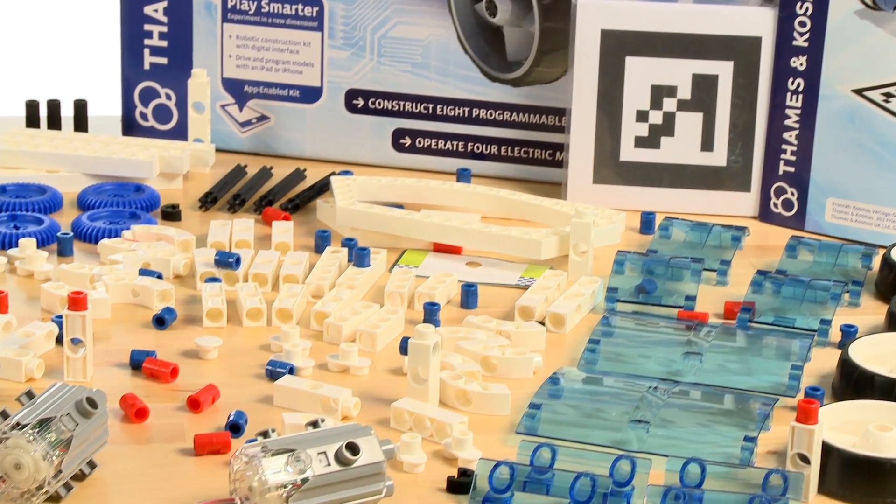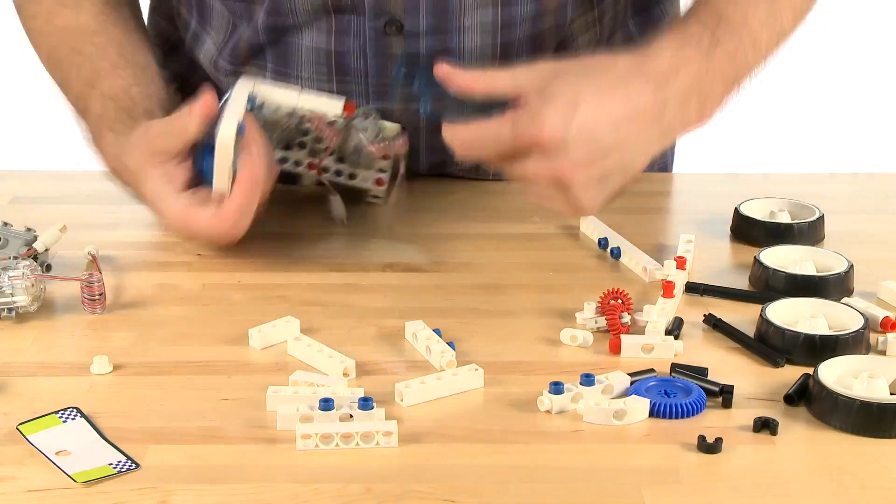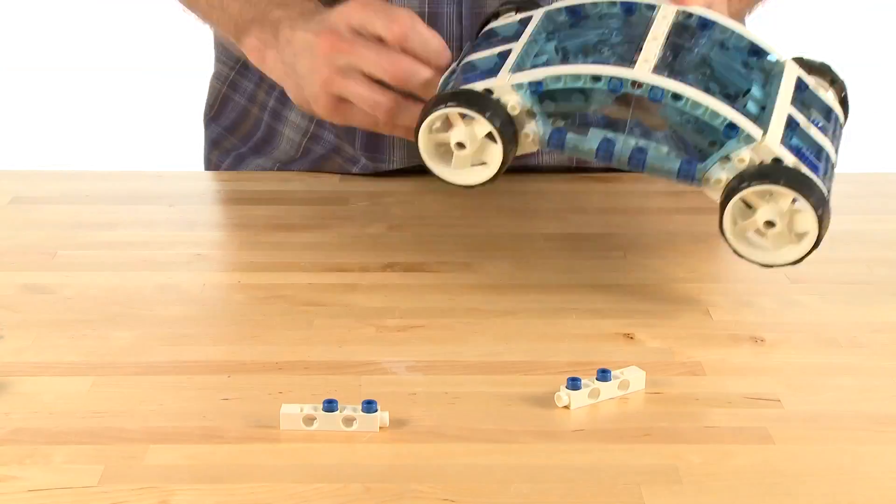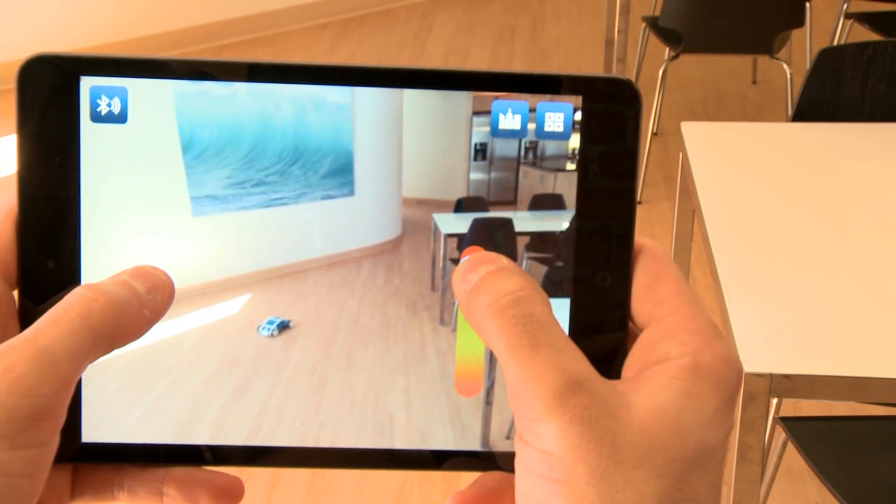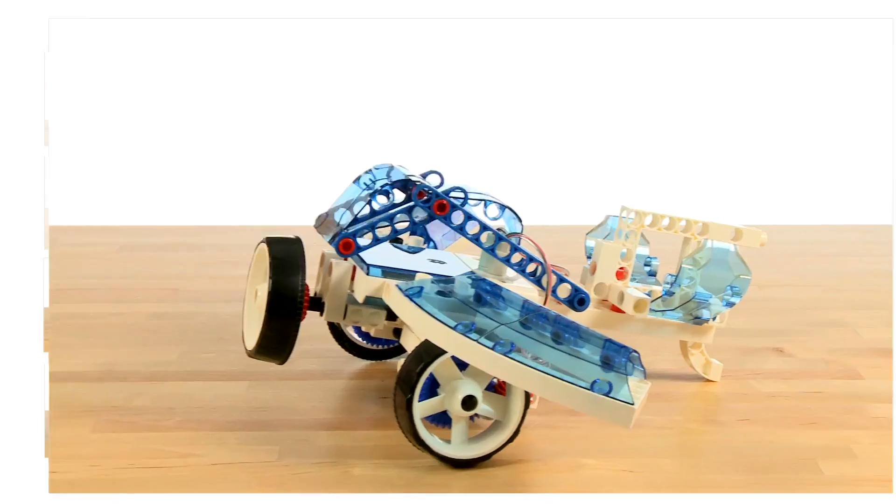Smart Car Robotics is a multiple build set where you can build your own model vehicle and program it with a smartphone or tablet. Smart Car Robotics allows you to build up to eight different controllable models, including three flying models.